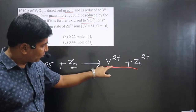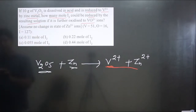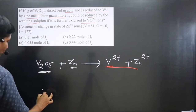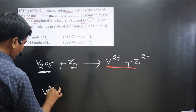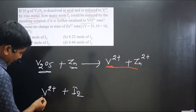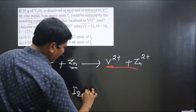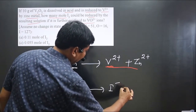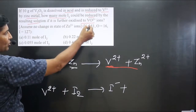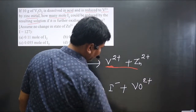Only V²⁺ will participate in the reaction. The second equation: V²⁺ reacts with I2 molecule, and V²⁺ reduces I2 into I⁻ while undergoing oxidation to convert into VO2²⁺.